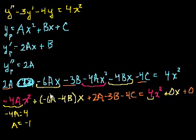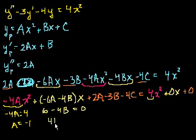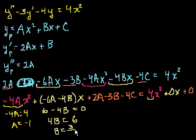Now the x terms: minus 6a minus 4b must equal 0. Substituting a equals minus 1: minus 6 times minus 1 gives 6, so 6 minus 4b equals 0. Therefore 4b equals 6, and b equals 3 over 2.